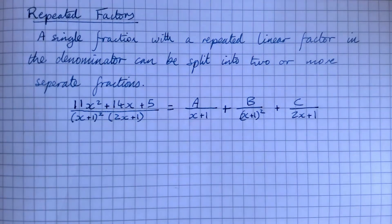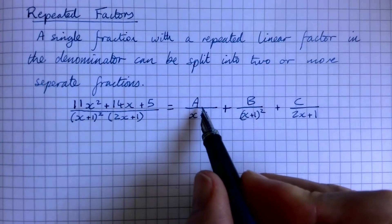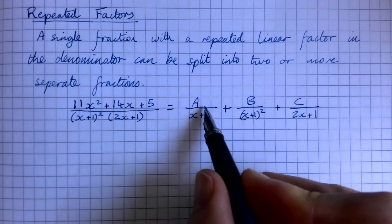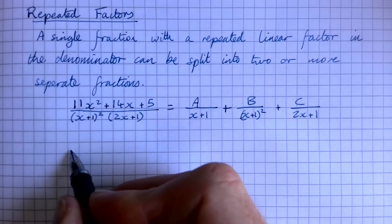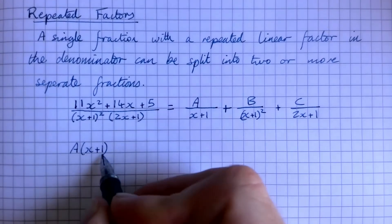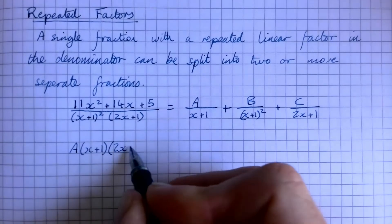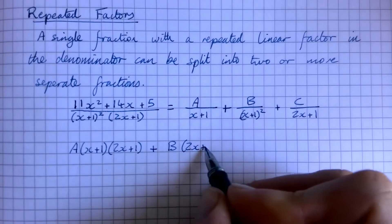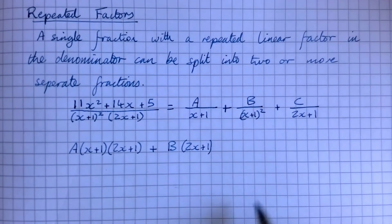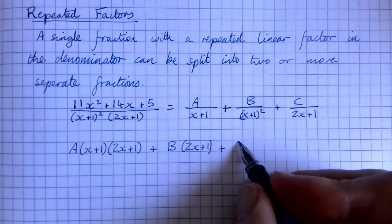You might want to have a go now and see if you can predict what's going to happen. We need to multiply the top parts by all the other factors. Now A's already got one load of x plus one, but it's going to need another one to make the x plus one squared and the two x plus one. The B only needs the two x plus one, so that's the simplest one, and the C is going to need the x plus one squared.